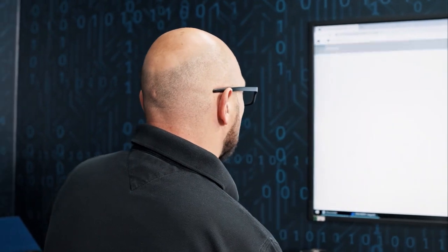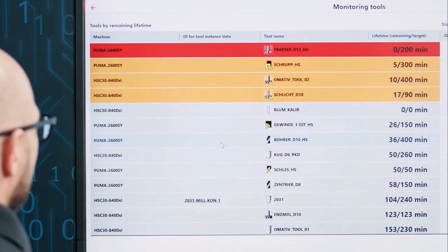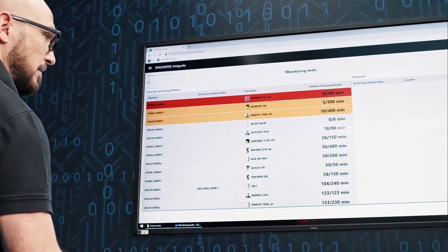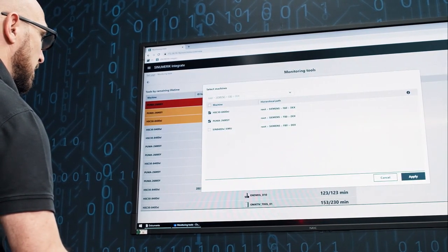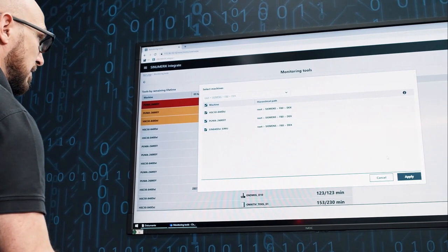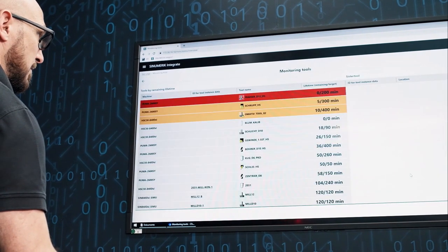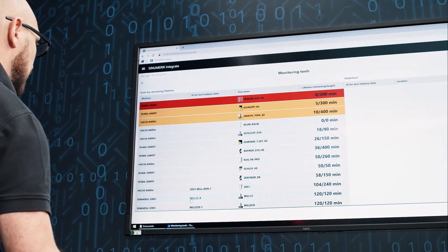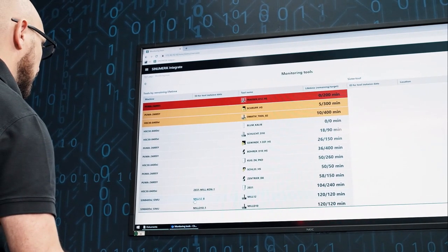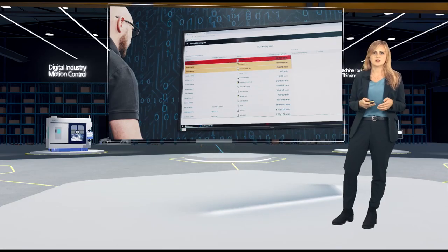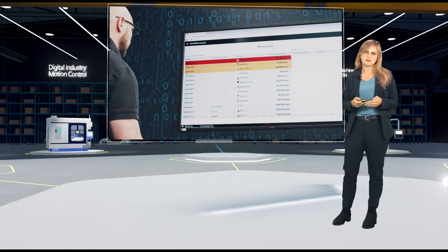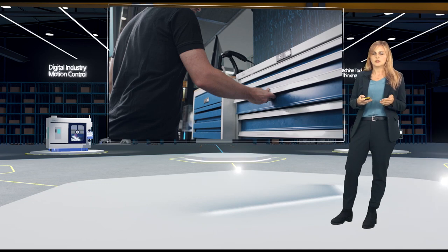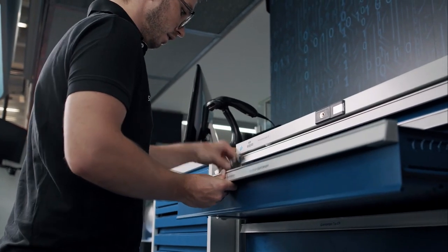So, how about a central overview in the production department that shows which of the tools are in which condition? By means of this color coding, it can be seen at the first glance when an early warning limit or even the end of the tool life has been reached. If possible sister tools are available, it is indicated where they can be found. And compared to a manual check at each individual machine, this saves the machine operator a lot of effort in terms of walking distances and search times. And of course, it can be ensured that the right tool is available exactly when it's needed.